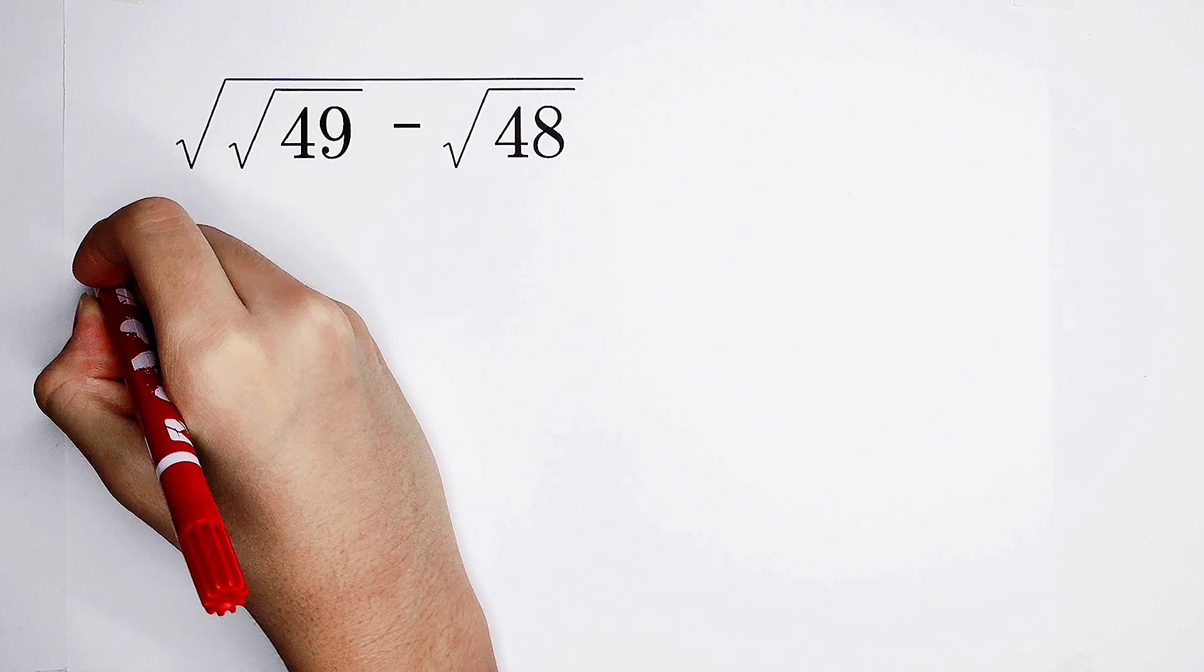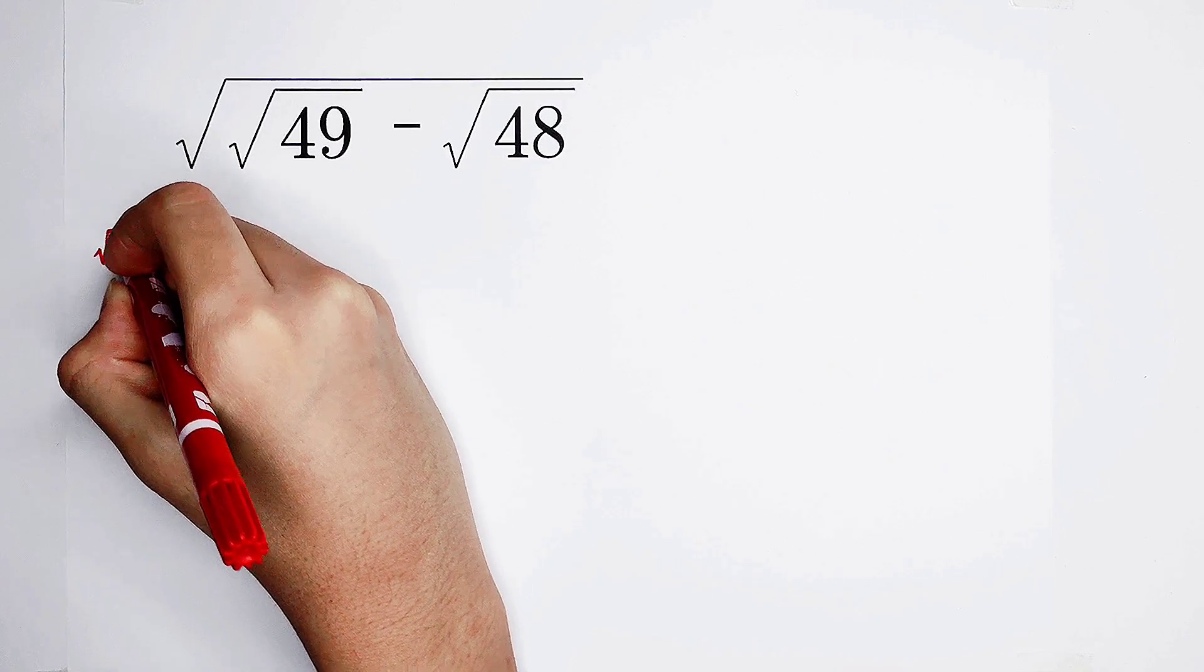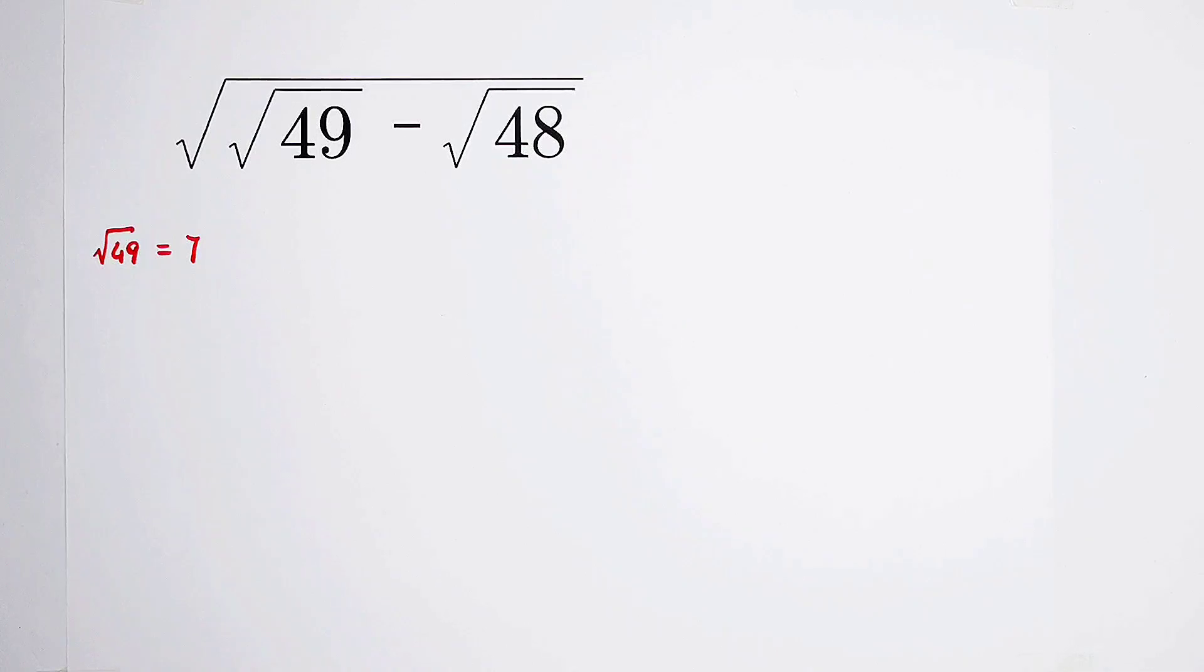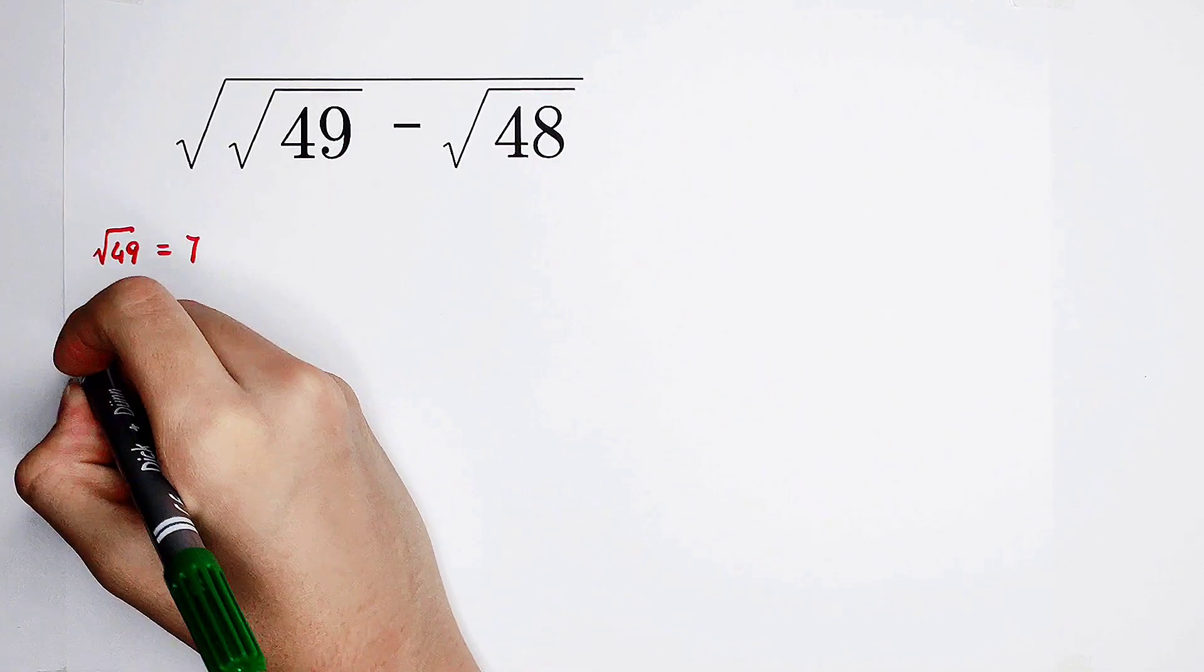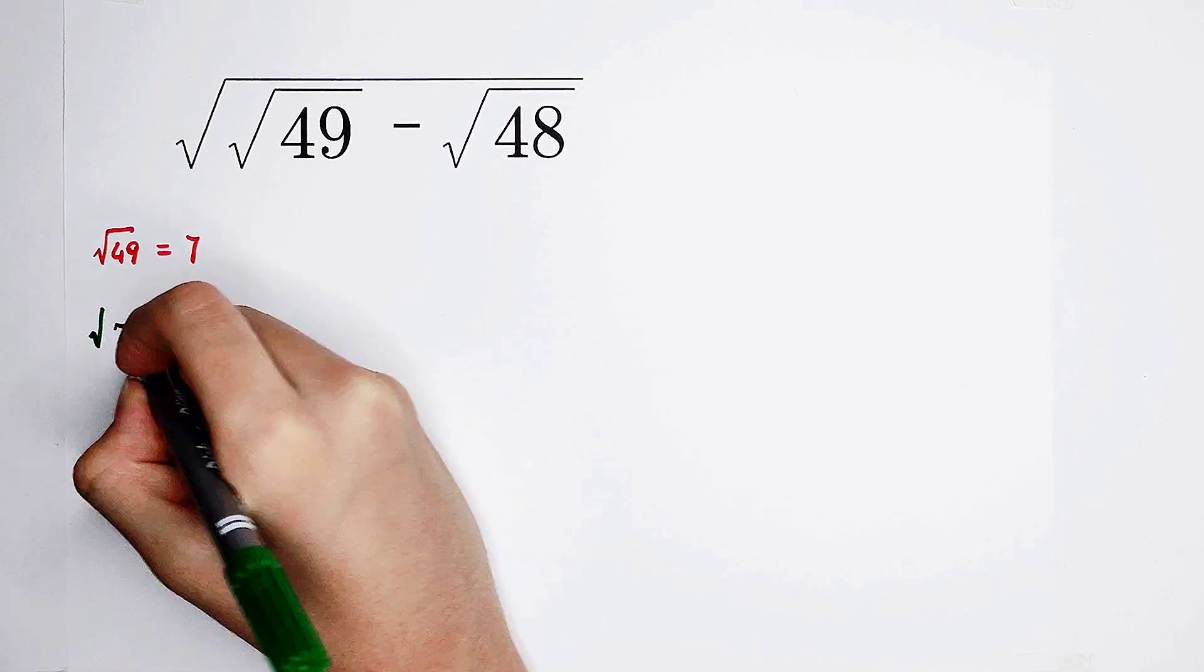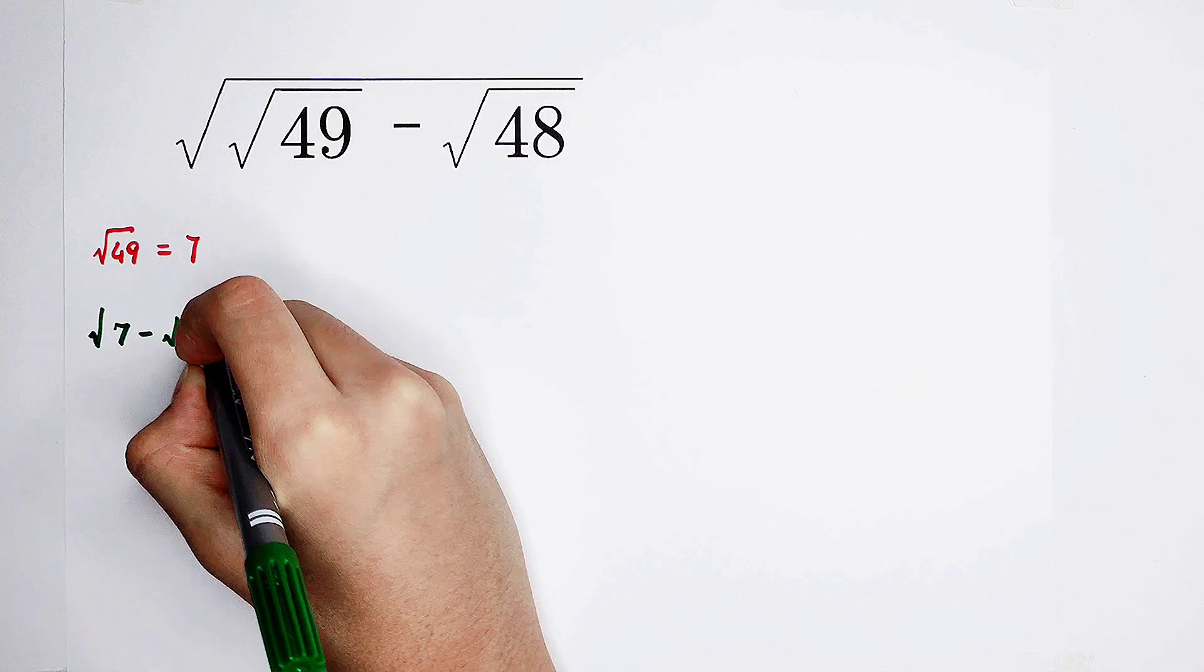So, square root of 49 is 7. Then replace it with 7. The first step will be square root of 7 minus square root of 48.